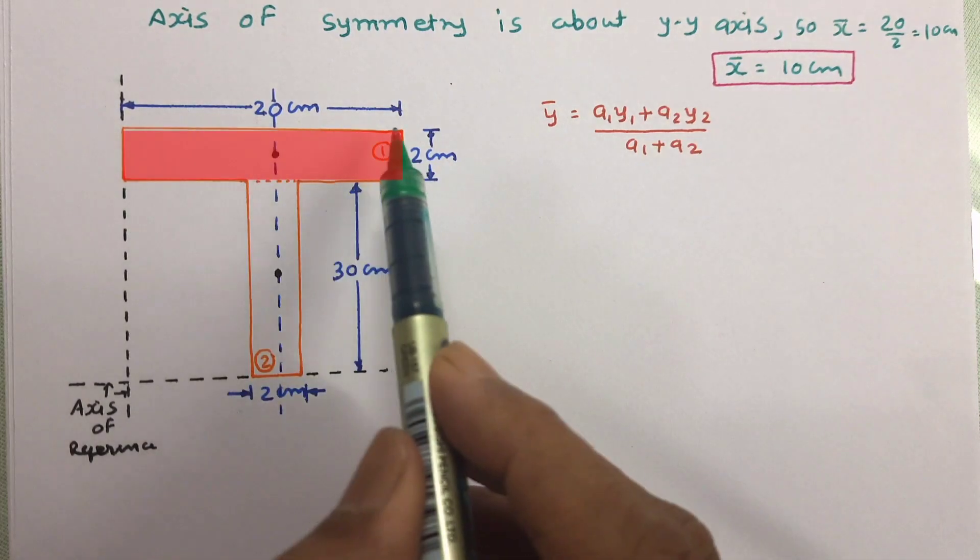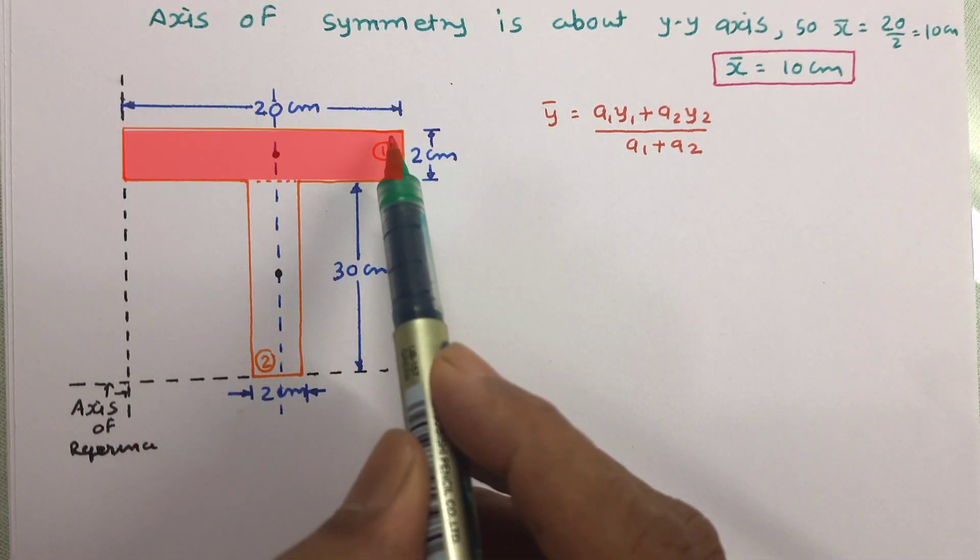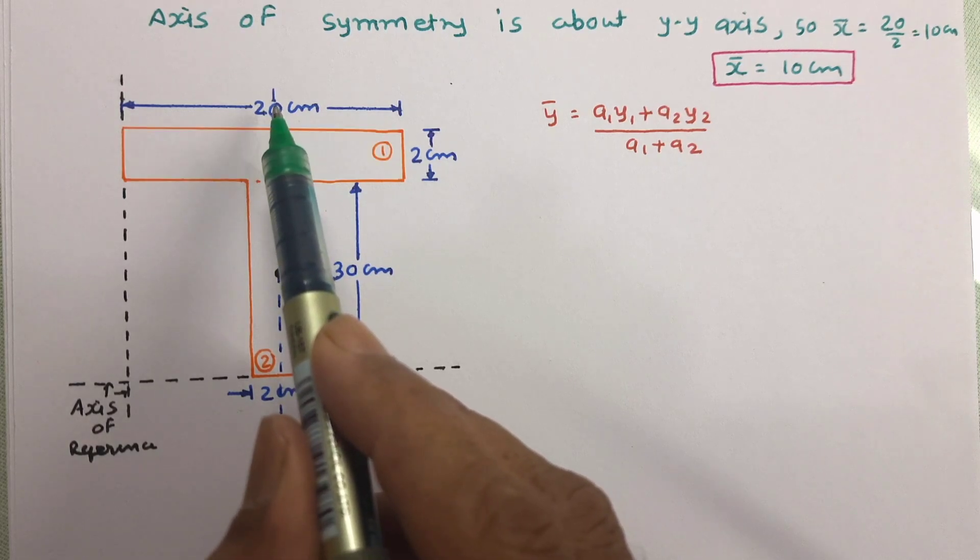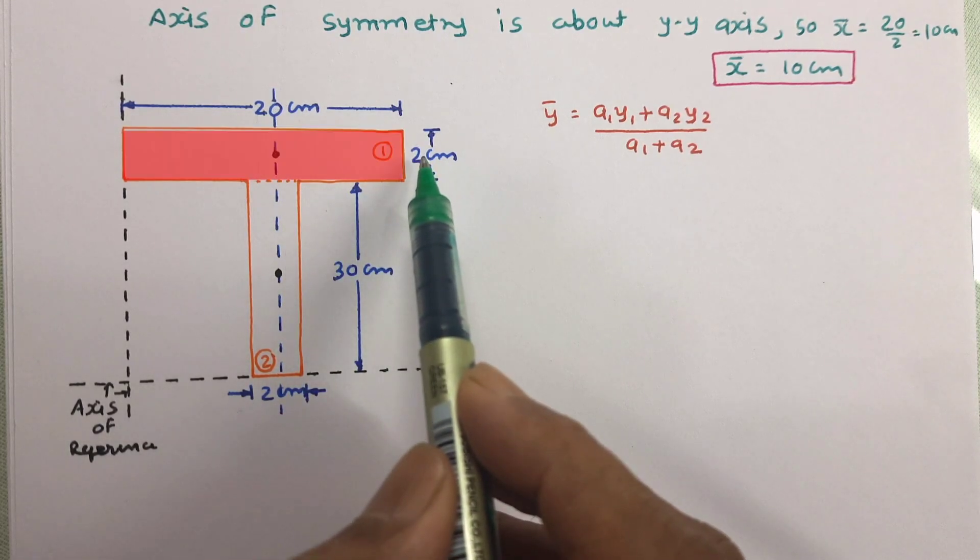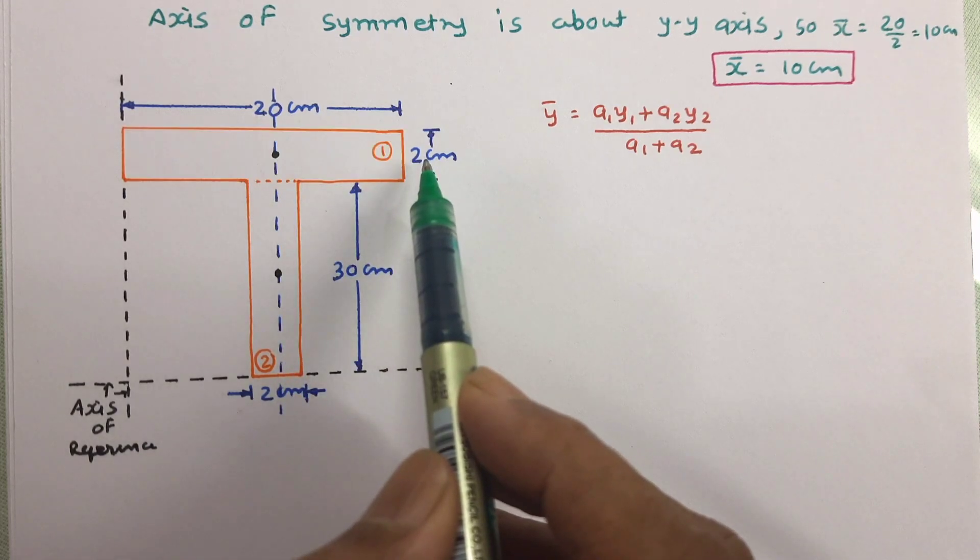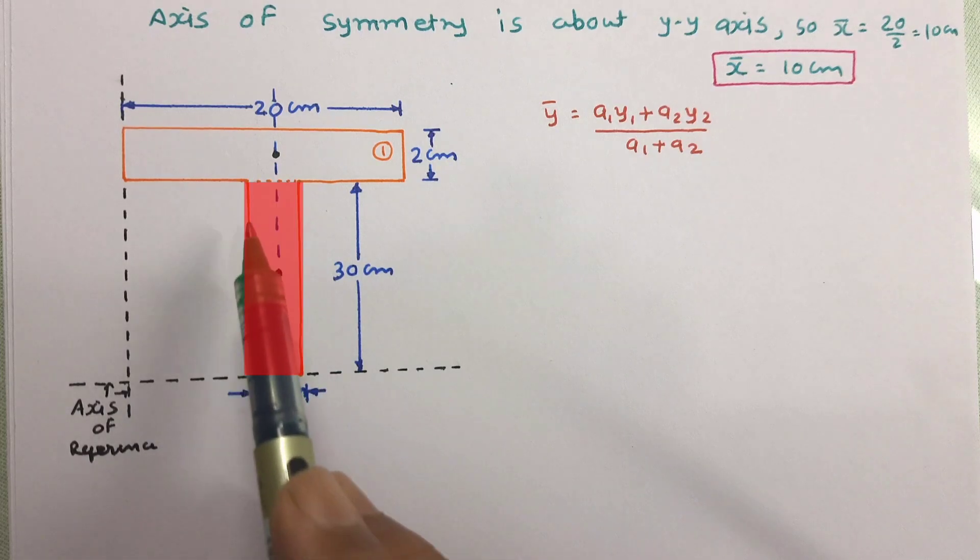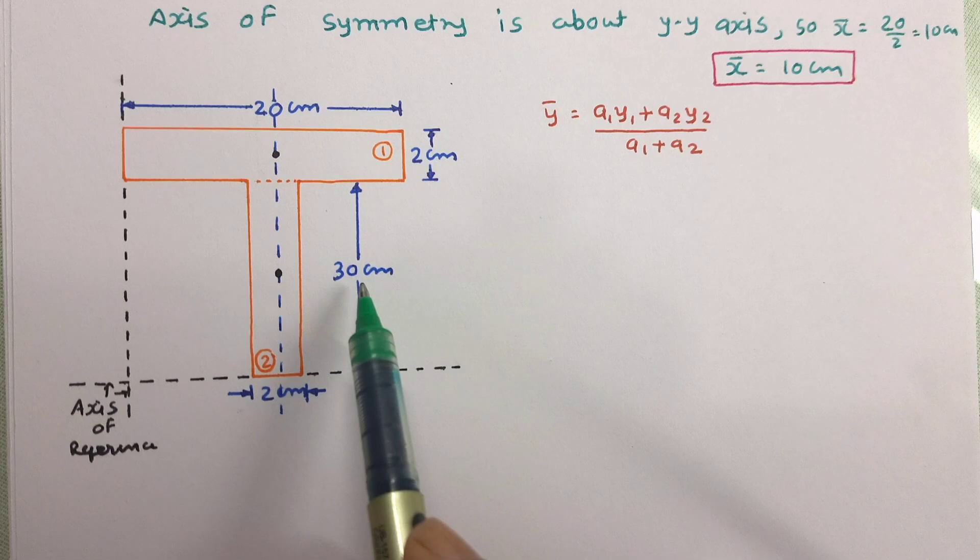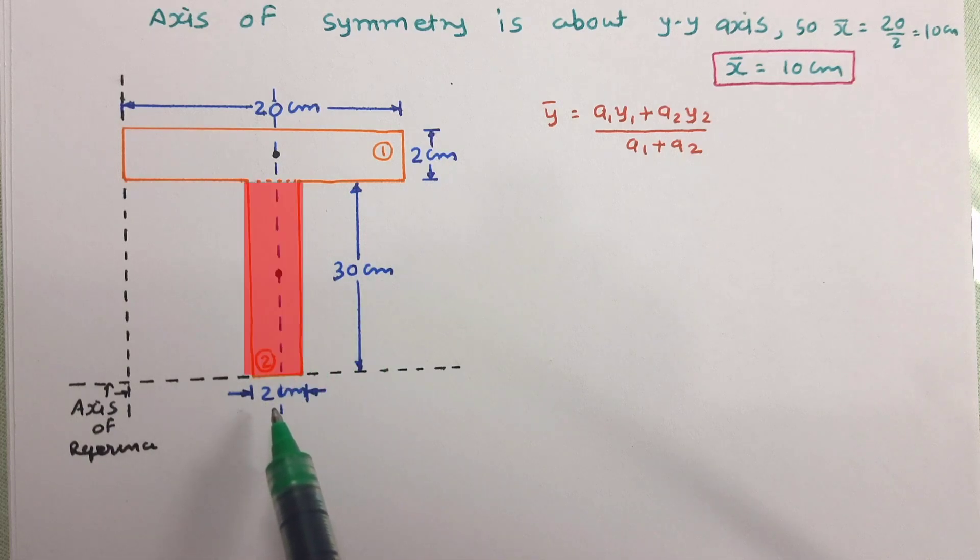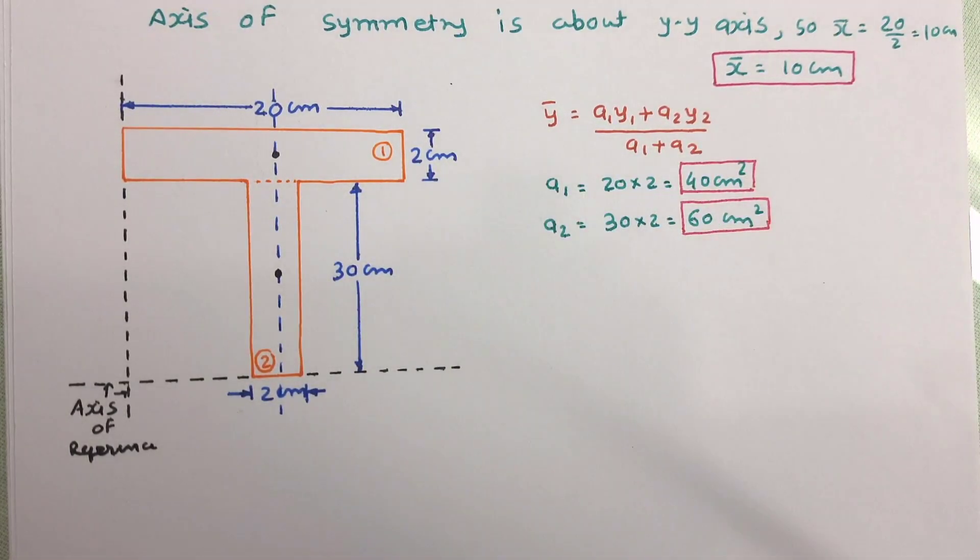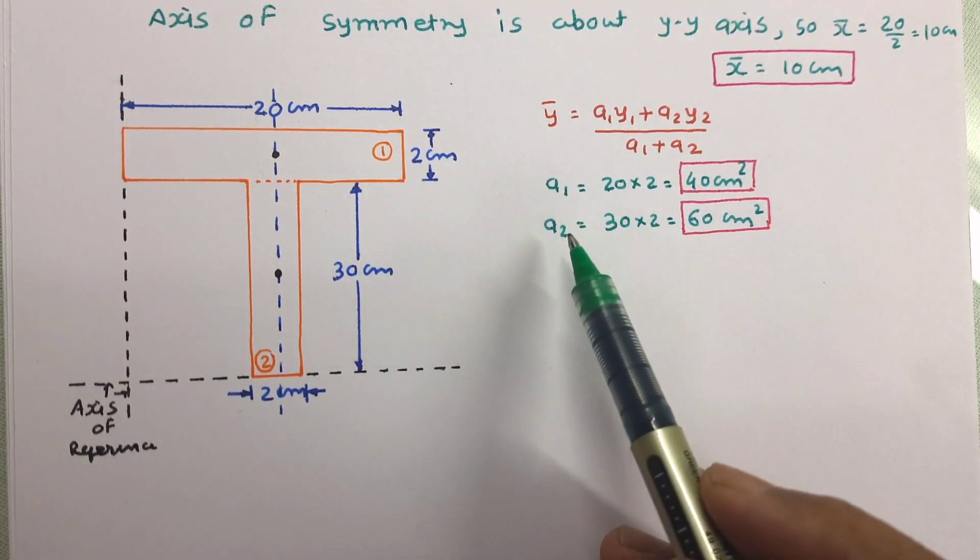Let us start with a1. A1 is area of this rectangle. We know that area of rectangle that is equal to length into width. So this is the l and this is b. Same way we can work out area of this rectangle also which is having length 30 cm and width 2 cm. So let us calculate a1 and a2.